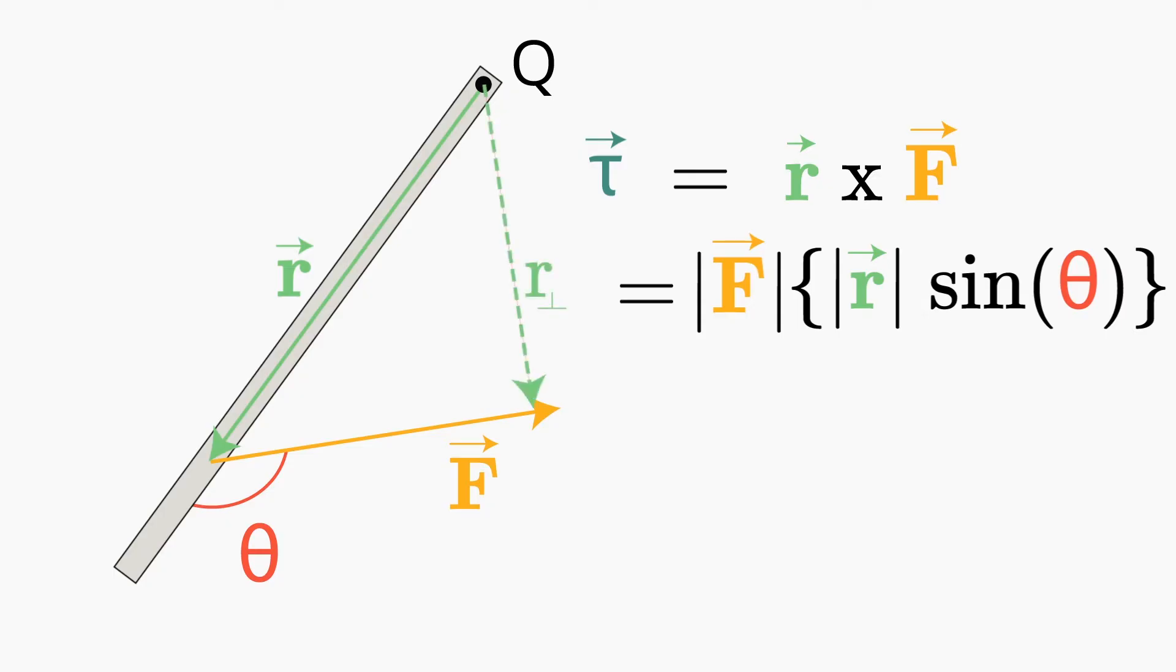So here, the torque is equal to the magnitude of the force times the magnitude of this perpendicular part of the vector R. This perpendicular portion of the distance vector R is often referred to as the moment arm.